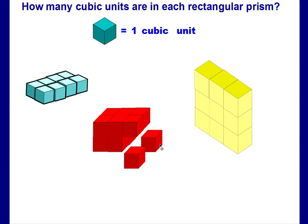If you take a look at this one, there's two, three, four, five, and there's six per level. Since we have two levels, our volume would be 12 cubic units.